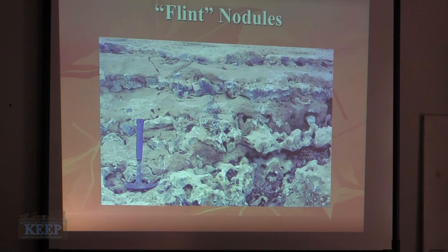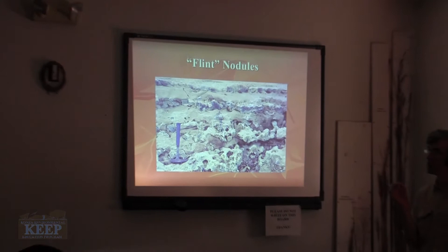Flint has all kinds of different names. Jasper is the same composition. Agates are the same composition — there are just all kinds of different colors. The flints we have here tend to be white to gray to fairly dark gray. The colors come from mineral impurities, and you can get all kinds of colors. But it's silicon dioxide.